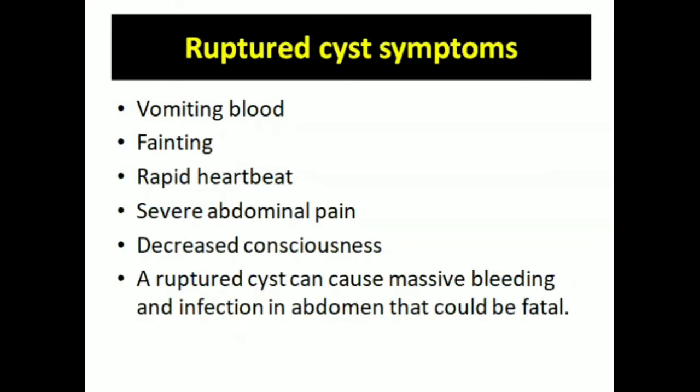When a pseudocyst ruptures, symptoms include vomiting, fainting, rapid heartbeat, severe abdominal pain, and decreased consciousness. Ruptured cysts can cause massive bleeding and infection, which could be fatal.